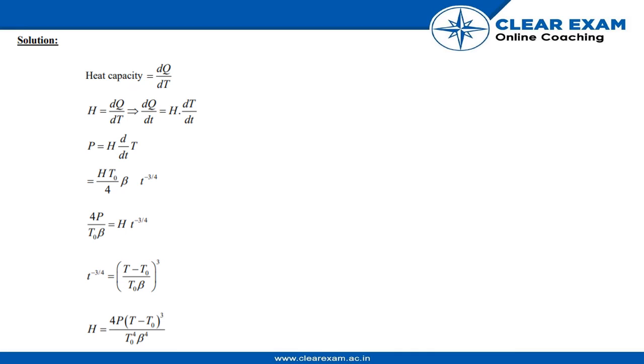Now we would simply calculate and simplify this term. We would get our answer, which is 4P(T - T₀)³/(T₀⁴β⁴), which would be our answer.